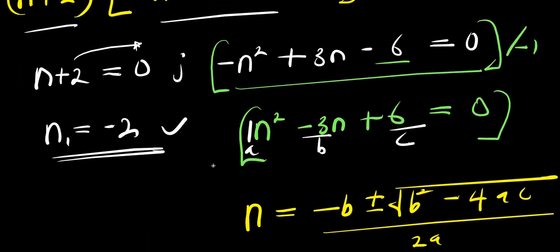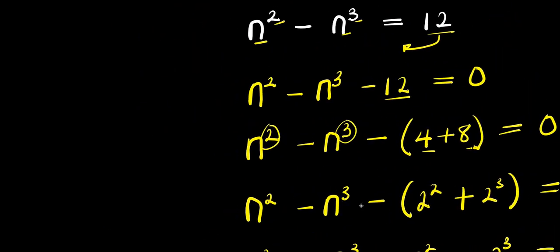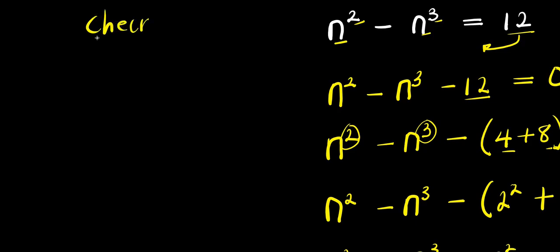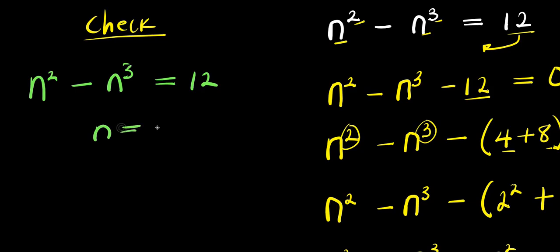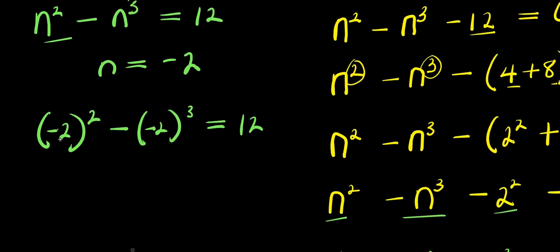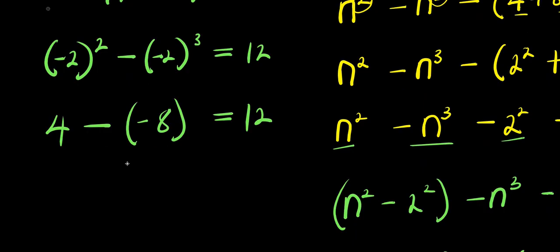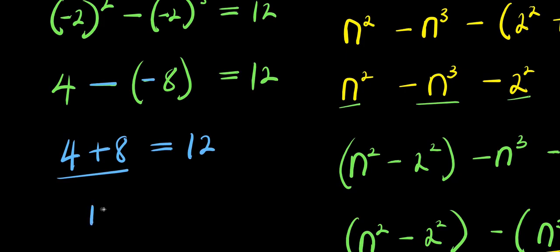We have one real solution and two complex solutions. Let's check by inserting n equals negative 2: n power 2 minus n power 3 equals 12. Substituting: negative 2 power 2 minus negative 2 power 3 equals positive 4 minus negative 8 equals 4 plus 8 equals 12. Twelve equals twelve — verified.